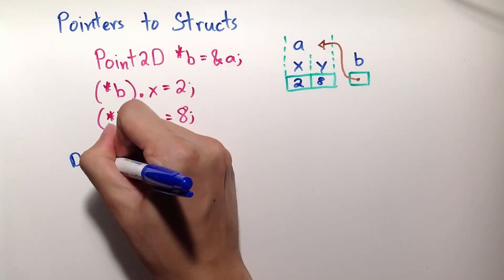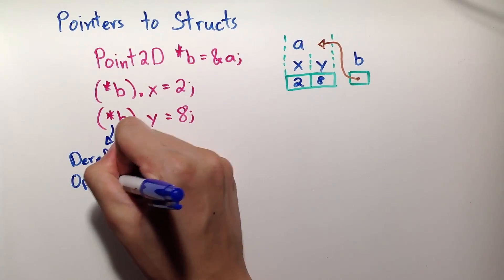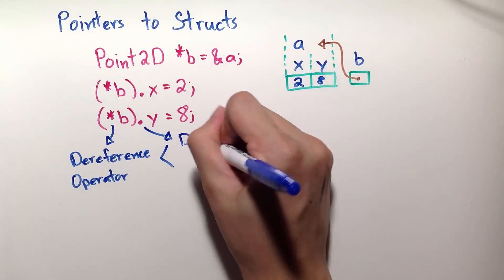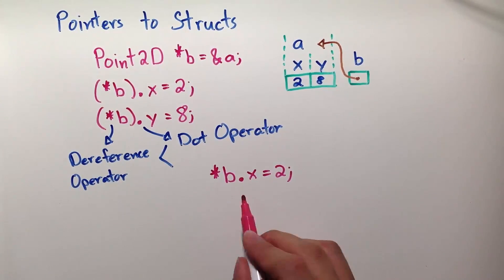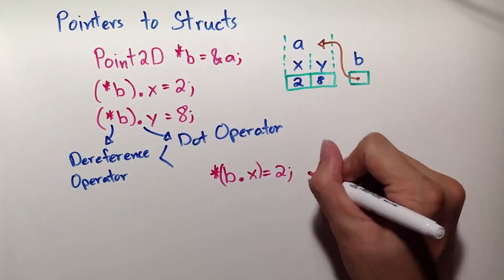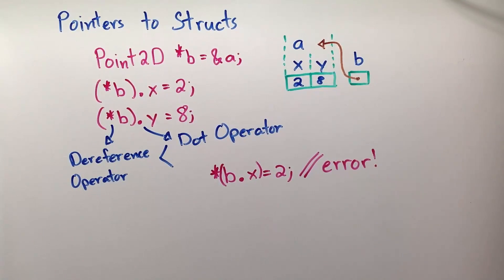Note that the dereference operator has a lower precedence than the dot operator, meaning the parentheses are necessary. Without the parentheses, it would be interpreted as such. The dot will be followed first, which will not make sense and will cause an error because B doesn't have a child.